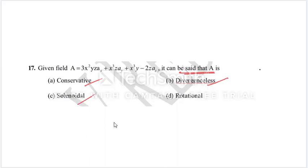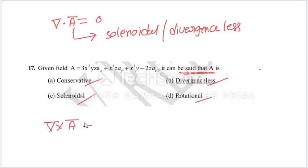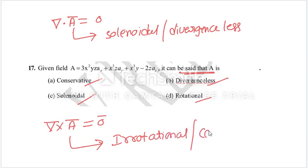The given field - we need to say whether it is conservative, divergence-less, solenoidal, or irrotational. If divergence of a vector is zero, then the vector is called solenoidal or divergence-free. If del cross A equals zero, then we call it irrotational.